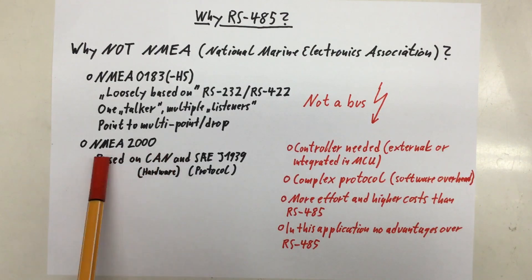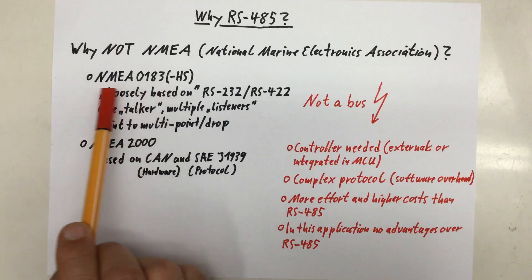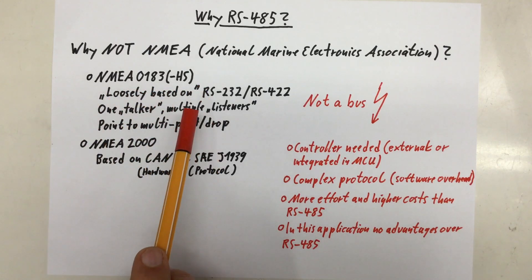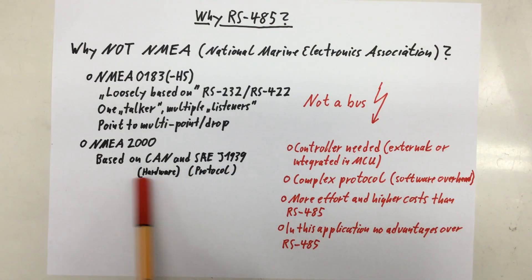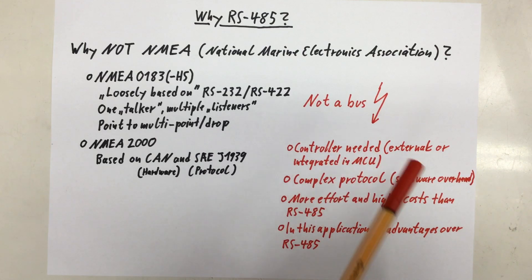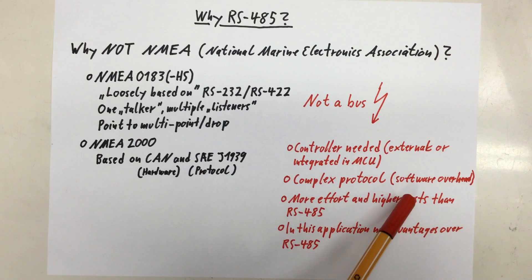Then we have NMEA 2000, which is currently probably the most used NMEA protocol and slowly but surely completely replacing NMEA 0183, at least in the long term. It's based on CAN, yeah, the hardware layer, and SAE J1939 as a protocol layer. Now, for CAN, you really need a hardware controller. Either an external chip or one integrated in your MCU. Also, SAE J1939 is quite a complex protocol, so there is some software overhead to be expected. In conclusion, it's more effort and higher costs than an RS485 implementation, and at least in this application, there are no advantages over RS485.